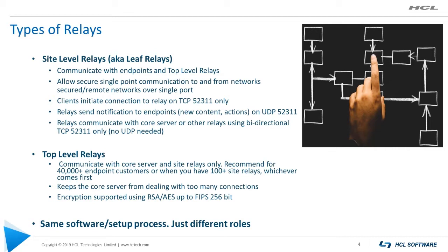Once you designate systems on the network as relays, endpoints are configured to use those relays for communication instead of reaching all the way back to the core server. This communication occurs on TCP 52311, which the endpoint initiates when it needs to send a new client delta, action status, or heartbeat. Relays notify endpoints via UDP 52311 when new content is available — a new patch, a new action you deployed, or a new fixlet. Once relays notify endpoints on UDP 52311, clients immediately check in to see what's waiting for them and process that content. If UDP cannot reach endpoints, there is a feature called command polling that forces a client to check in on set schedules.